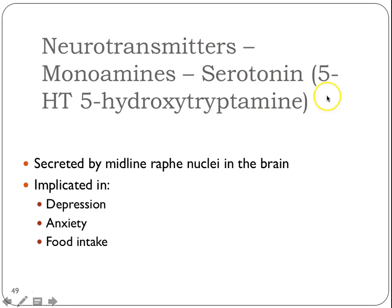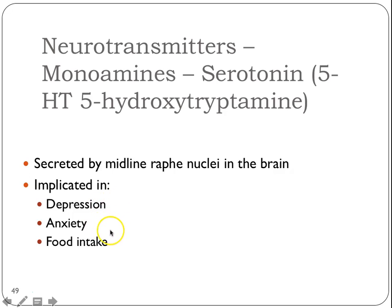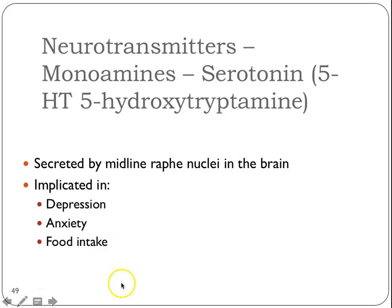Another classic neurotransmitter you've probably heard of is serotonin. Serotonin is implicated in many different mental illnesses: depression, anxiety, and food intake. If people are depressed or anxious, that definitely affects how they eat. Some people are so nervous they couldn't eat, or depressed and don't want to eat — or sometimes the exact opposite, they want to eat even more. It just depends on the individual.